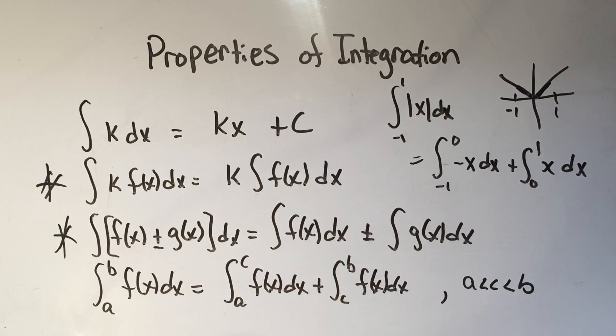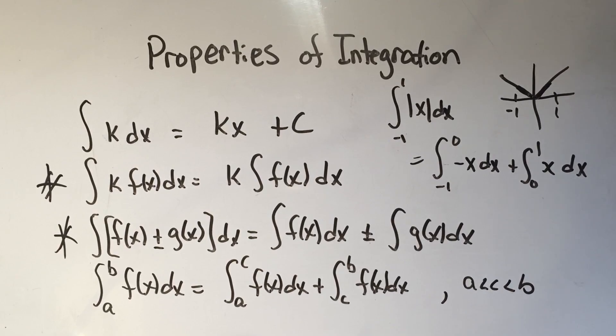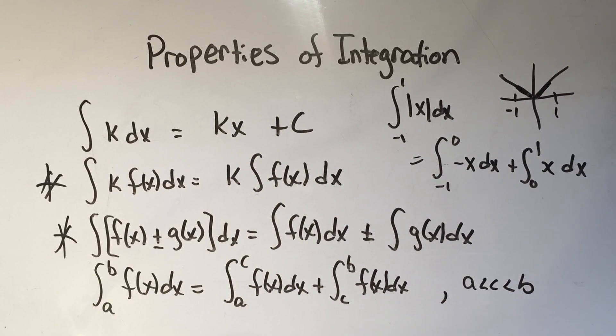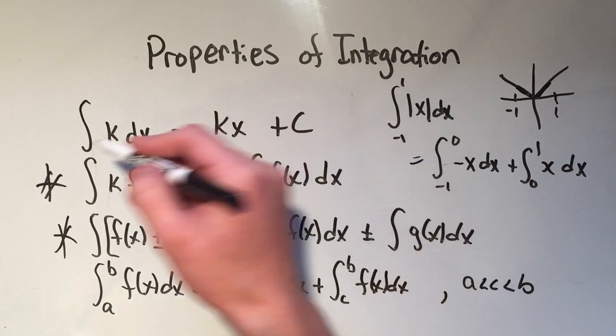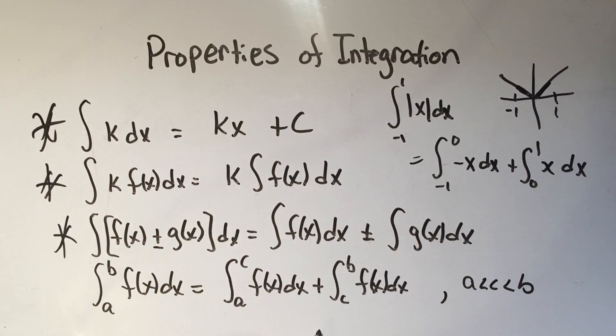There's a few other properties, like a comparison property and an absolute value property. Those don't come up too much in calc one, so I kind of left them out here. If you really feel like looking them up, you can just look through your calculus textbook. But I think these four are the main ones that you're actually going to be using, especially these middle two, well actually this first one too. So these first three especially, and this last one only sometimes, but they're important to know.